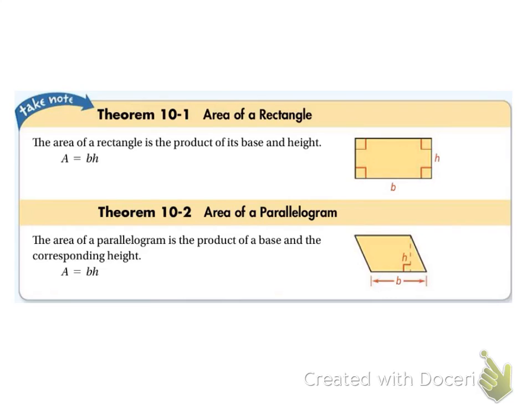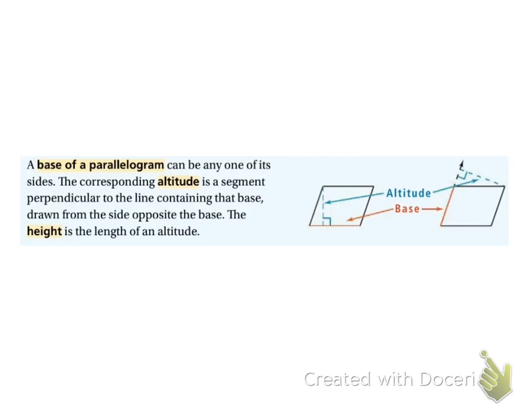So the area of a rectangle and a parallelogram both have the same equation, and that's A equals bh. The base of a parallelogram could be any side. It just depends which height you have. So our height is always going to be an altitude. You can see in this one that the altitude's inside, and in this one the altitude's outside.